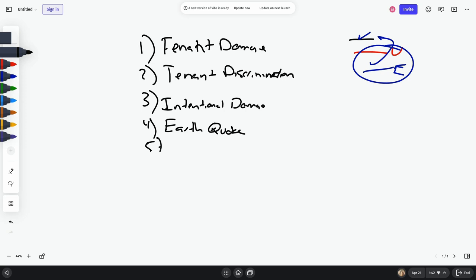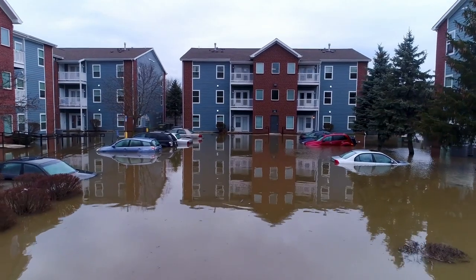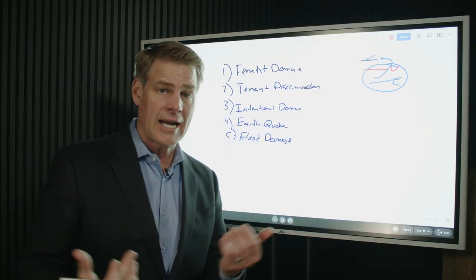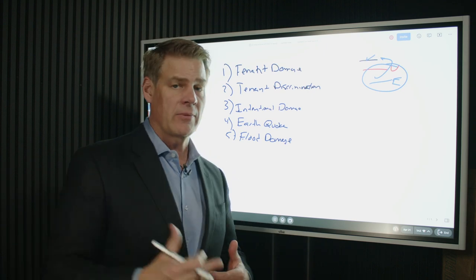Another one, the fifth one, is gonna be floods, right? Maybe you live in a flood plain, or you're around, or it's near a river or something, but you have levees. You never thought this was gonna happen, but it does. And the property floods out, and all of the tenant's possessions are destroyed as a result of that.